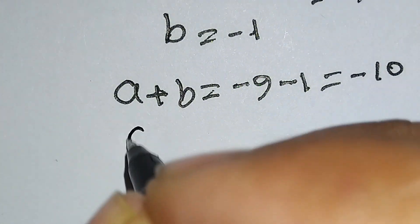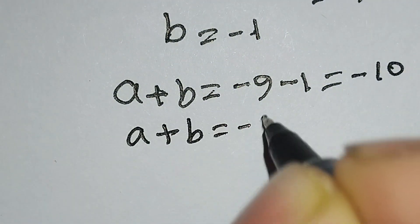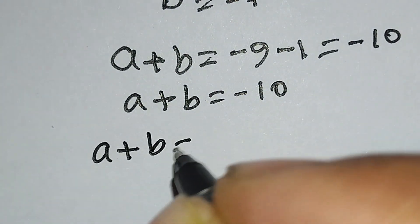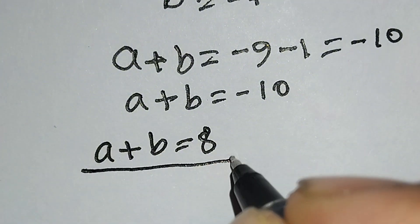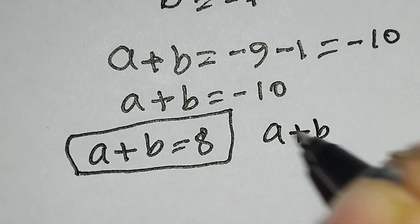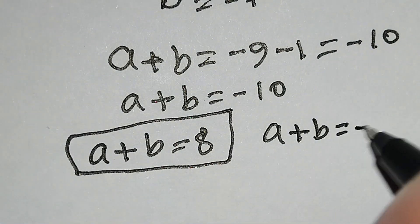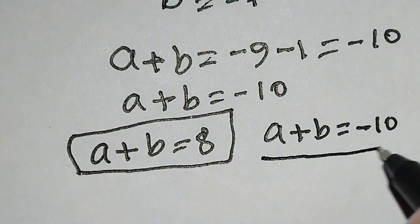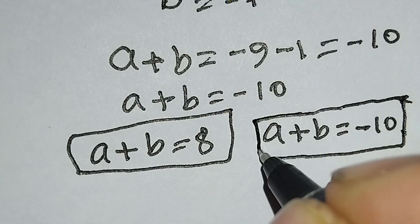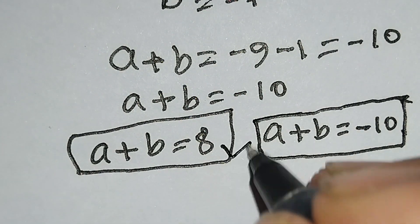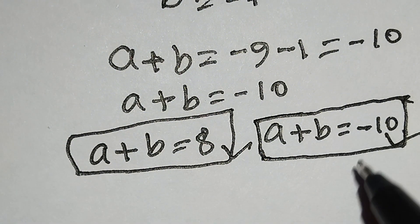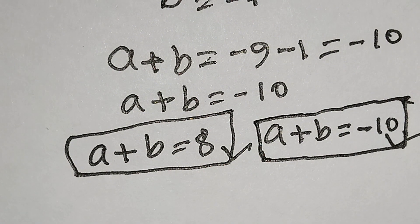From Case 2, a + b = −10. These two are the right answers: a + b = 8 and a + b = −10. Thanks for watching the video. Please like, comment, share and subscribe.